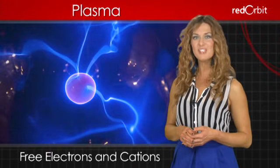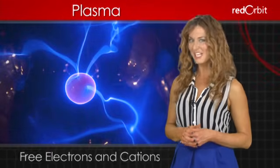Plasma is the state of matter that consists of a mass of free electrons and positively charged particles called cations mixed together.